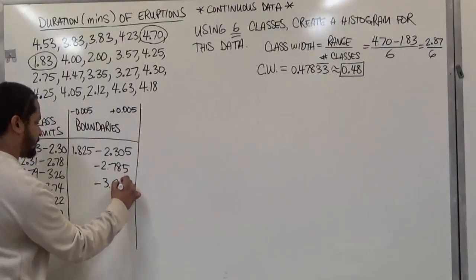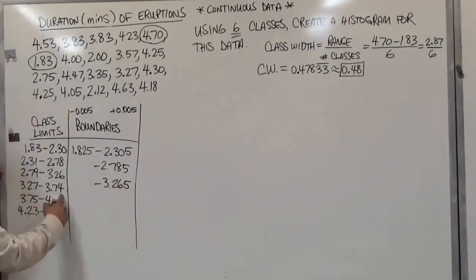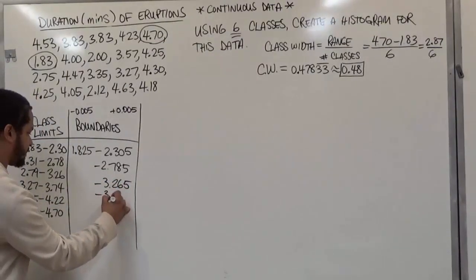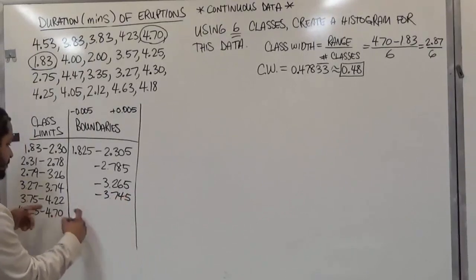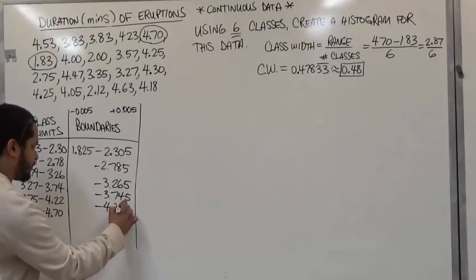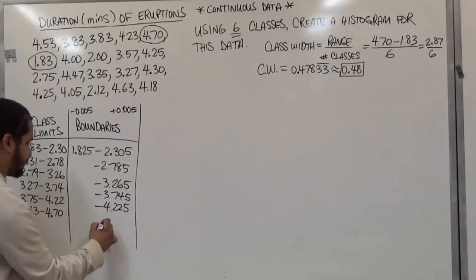Here I have 3.265. I take this number and just add the five at the end. The same goes for the 4.22, and also for the 4.70.